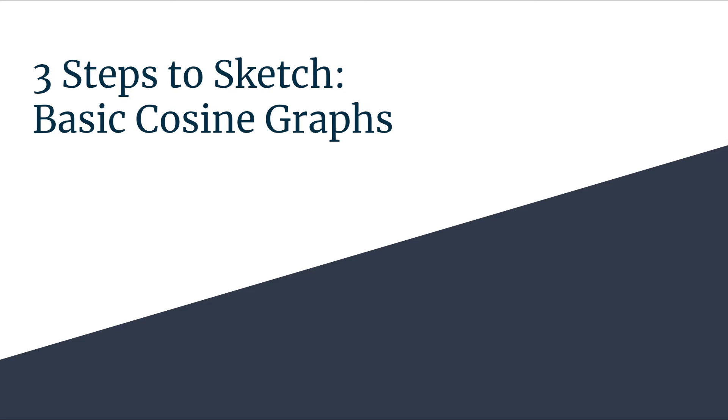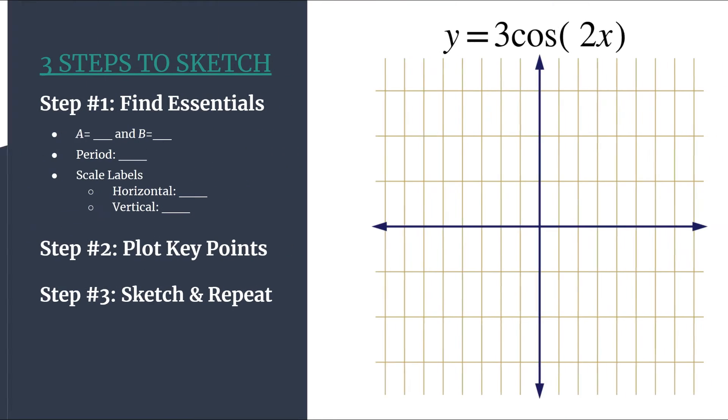In this video we'll use a three-step method to graph the basic cosine graph. So we're going to look at y equals 3 cosine of 2x. Let's jump in.